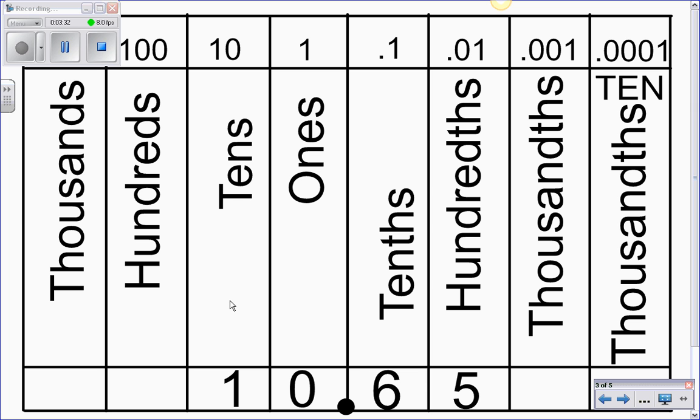So 1 is in the tens spot, 0 is in the ones spot, then we have our decimal, then 6 in the tenths, and 5 in the hundredths. So we would read this ten and sixty-five hundredths. So ten and sixty-five hundredths. So let's take a look at this by converting it into a fraction.